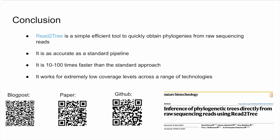To summarize: in this study we produced a novel tool called Read2Tree, which is a simple, efficient tool to quickly obtain phylogenies from raw sequencing reads. It is as accurate as a standard pipeline, 10 to 100 times faster than the standard approach, and it works for extremely low coverage levels across a range of technologies. QR codes are provided to access a blog post about the story behind the project, the paper itself, and the GitHub repository.